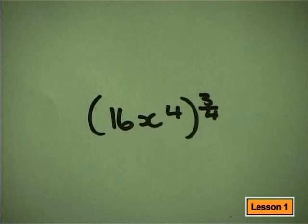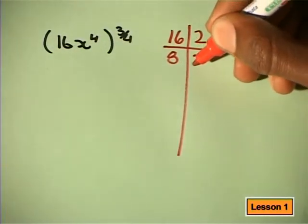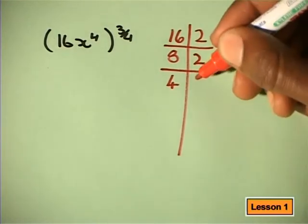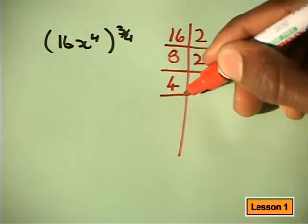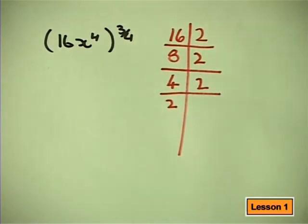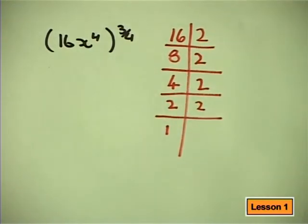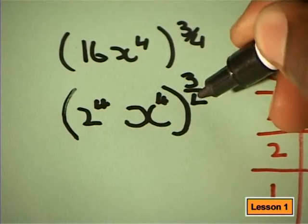Since we are working with exponents, it is often easier to break numbers down into their prime factors. We can do this by using what is called the ladder method. Here, let me show you. 16 can be divided by the prime factor 2. This gives us 8. 8 can also be divided by 2, leaving us with 4. Again, we can divide by 2 and we are left with 2. Lastly, 2 divided by 2 is 1. So 16 is 2 multiplied by 2 multiplied by 2 multiplied by 2, or 2 to the power 4.